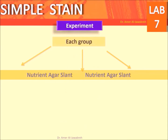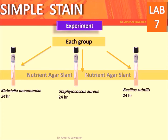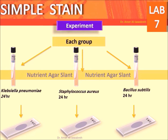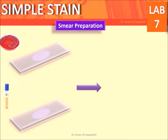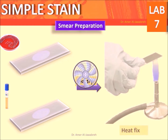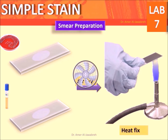For each group, provide three nutrient agar slants: the first containing Klebsiella pneumoniae, the second containing Staphylococcus aureus, and the third containing Bacillus subtilis. Prepare smears from each slant. Prepare the bacterial smear from culture media, air dry, then heat fix by quickly passing the slide two times over the flame.